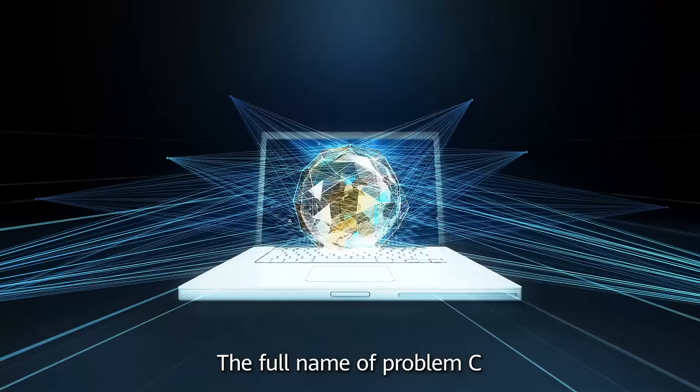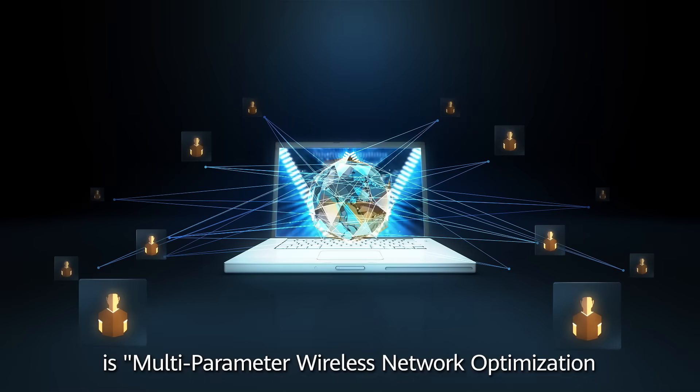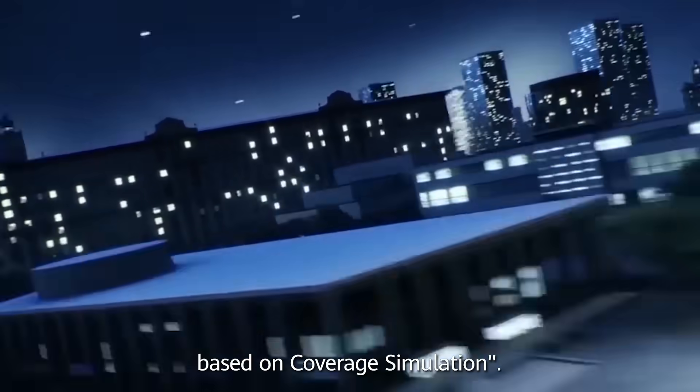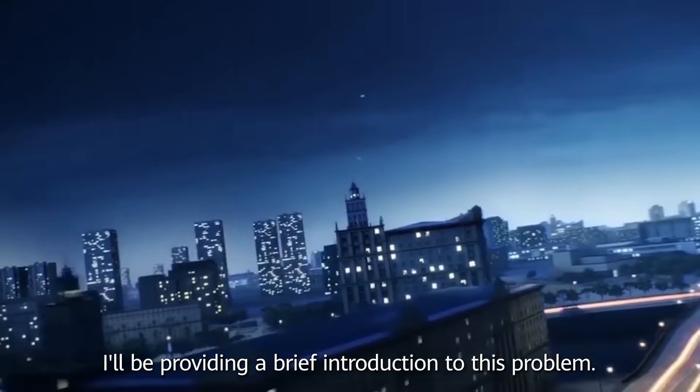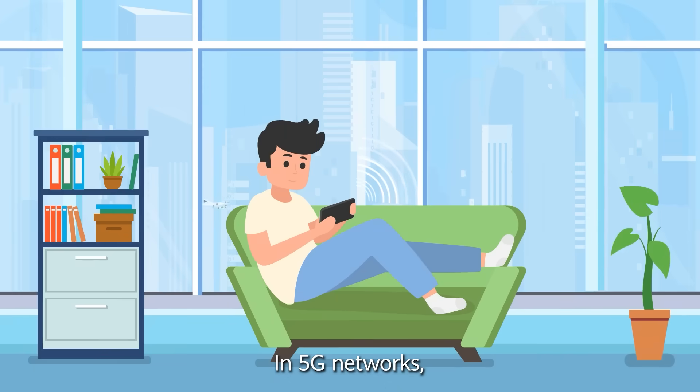The full name of Problem C is Multi-parameter wireless network optimization based on coverage simulation. In this video, I will be providing a brief introduction to this problem.